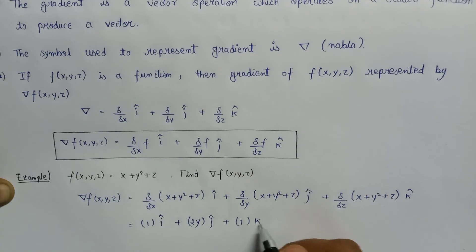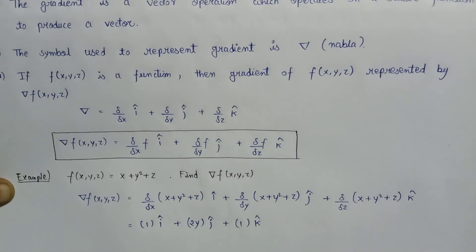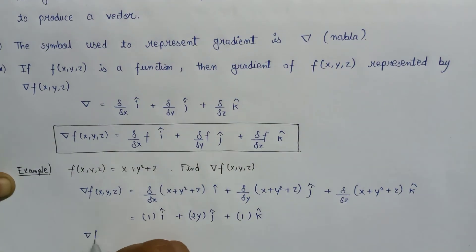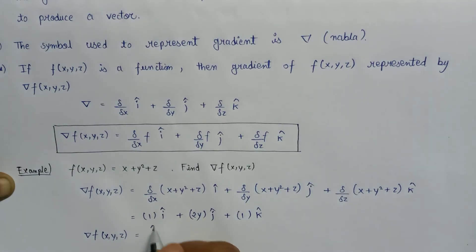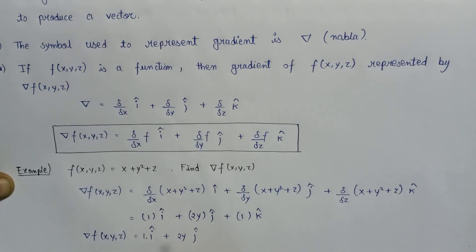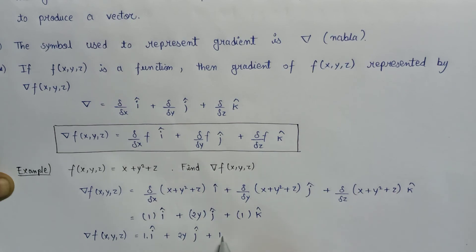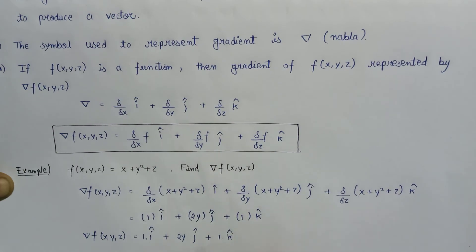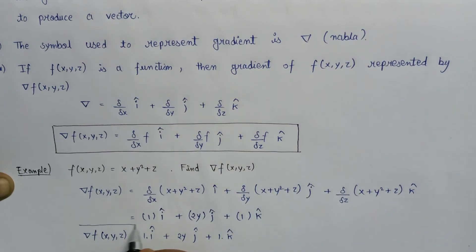The final output we get as del f of x, y, z will be equal to i cap plus 2y j cap plus 1 k cap. This is the value of del f.